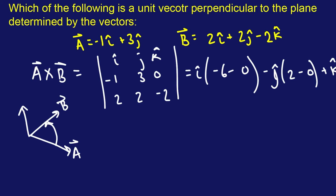And then we're going to add the K hat direction, which is going to be negative 2 times negative 2 minus 6. So our vector A cross B is going to be negative 6I, negative 2J, negative 8K. That is going to be the normal vector, but not the unit vector. Now if you want to determine the unit vector, all you've got to do is divide by the magnitude of this.